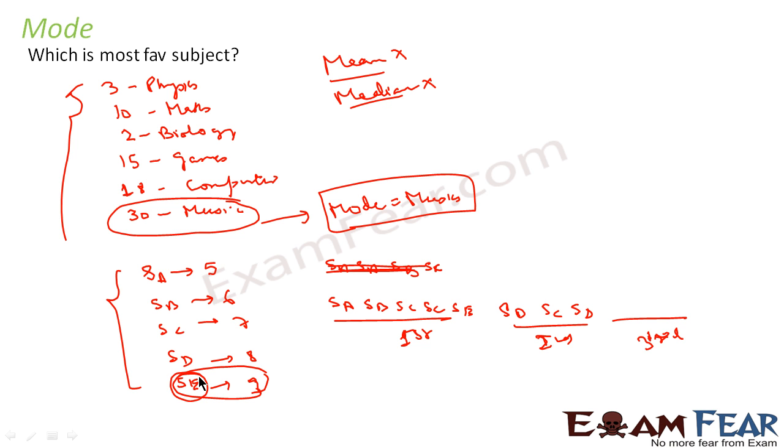Where we have to find who is the most irregular guy or which is the most favorite subject. So for such kind of thing, mean and median fail. You can't use mean and median there, we'll use mode.